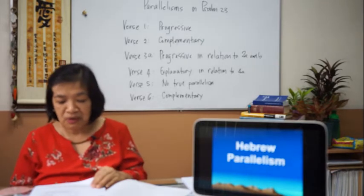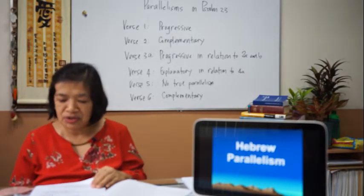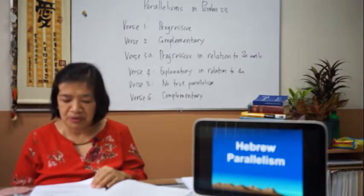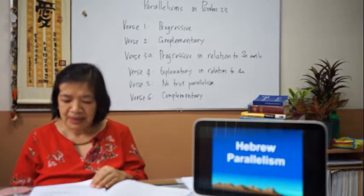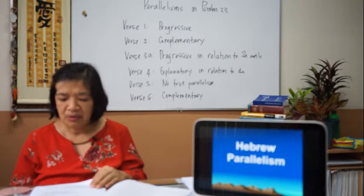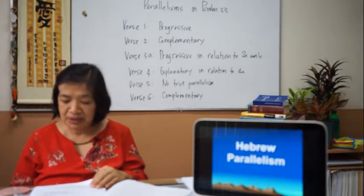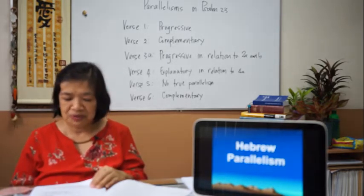Letter B is explanatory parallelism: the second line gives an explanation or reason for the previous statement. For example: 'Sing to the Lord, for he is highly exalted.' The reason why we sing to the Lord is because he is highly exalted.